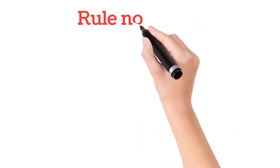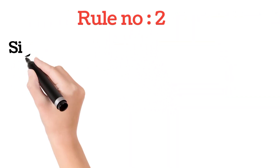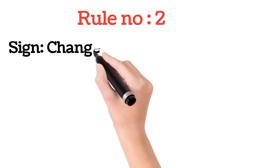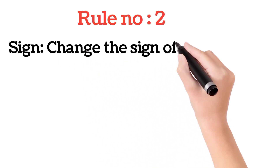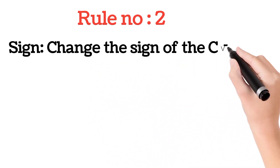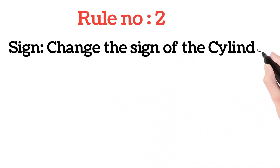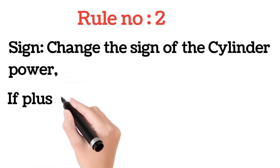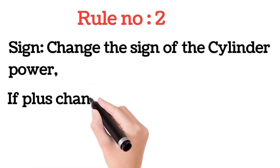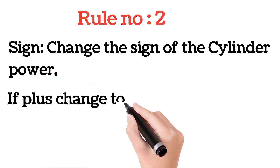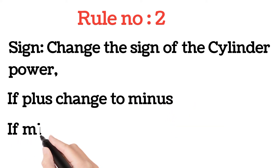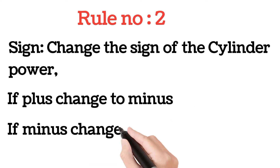Rule number two: change the sign of the cylindrical power. If the power is plus, change it to minus; if the sign is minus, change it to plus.